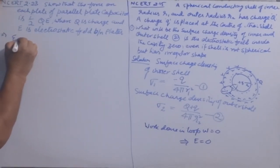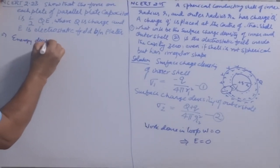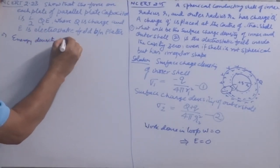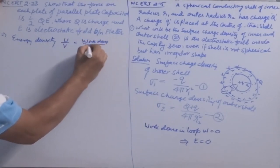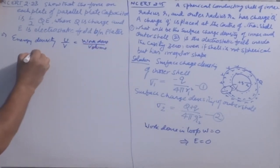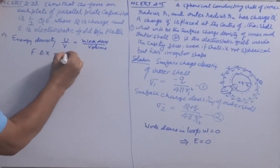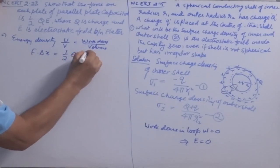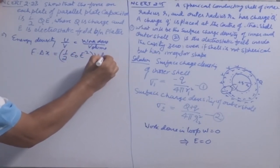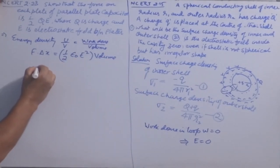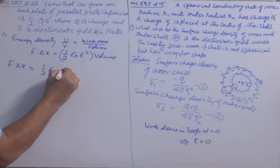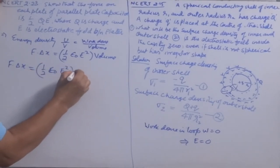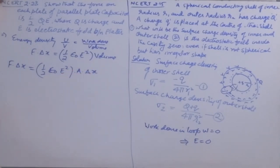We use energy density. Energy density U/V equals work done over volume. Work done is F × Δx, and energy density is also ½ε₀E². Volume is A × Δx, where Δx is the separation distance. So F × Δx = ½ε₀E² × A × Δx. The Δx cancels.